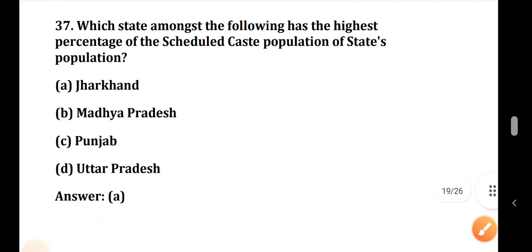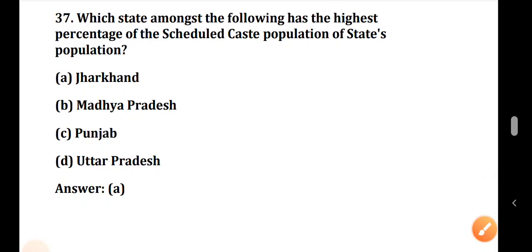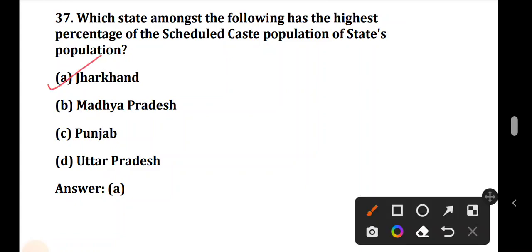Question number 37: Which state among the following has the highest percentage of SC population of state population? The correct answer is Option A — this state has the highest SC population in India.